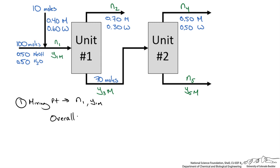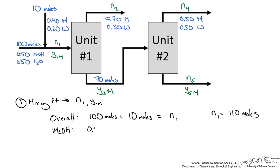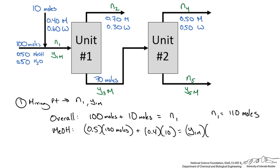Starting with the mixing point: an overall balance gives 100 moles plus 10 moles equals N1, so N1 equals 110 moles. A methanol species balance gives 0.5 times 100 plus 0.4 times 10 equals Y1M times 110, yielding a methanol mole fraction of 0.49, i.e., 49 mole percent methanol. These values are plugged into the schematic.